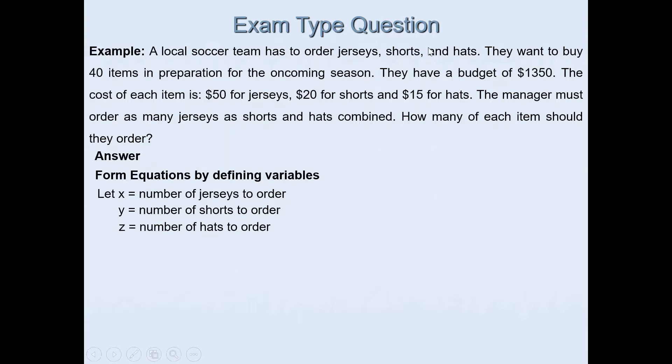We are told they need to buy 40 items. So if I add the number of jerseys, shorts and hats, the total should be 40. So I can write the equation: x + y + z = 40. That's my first equation.